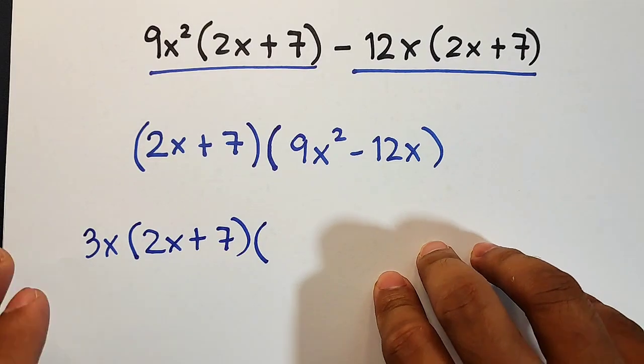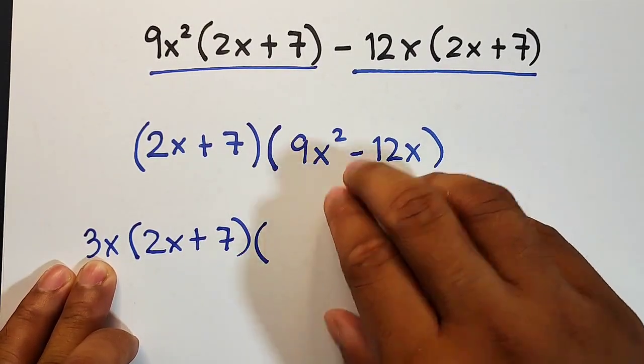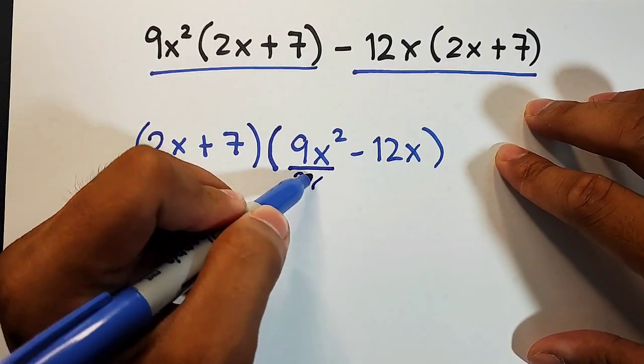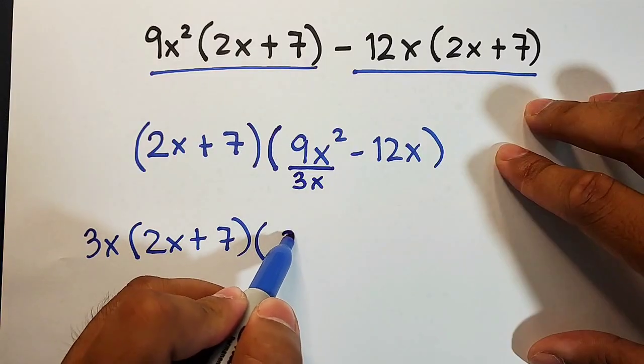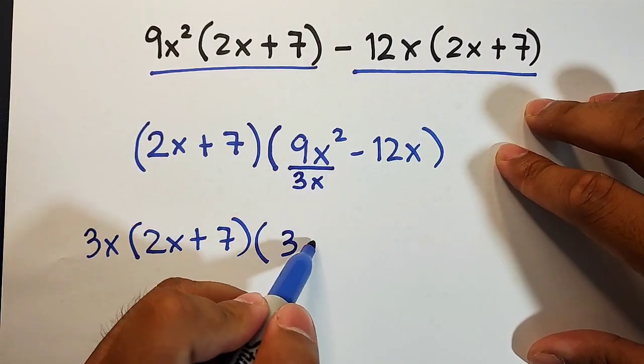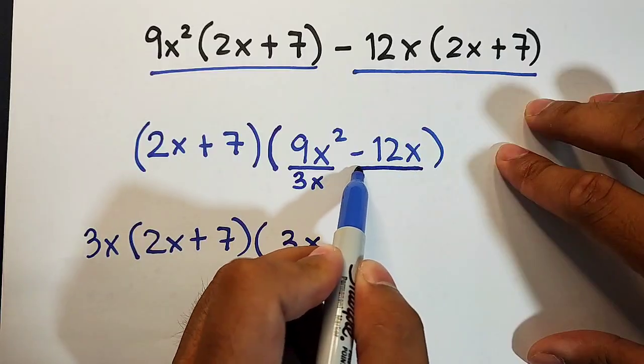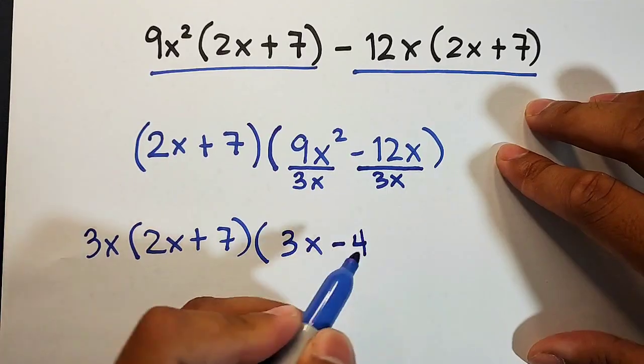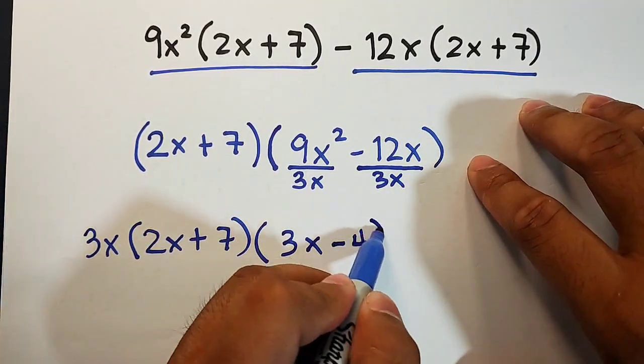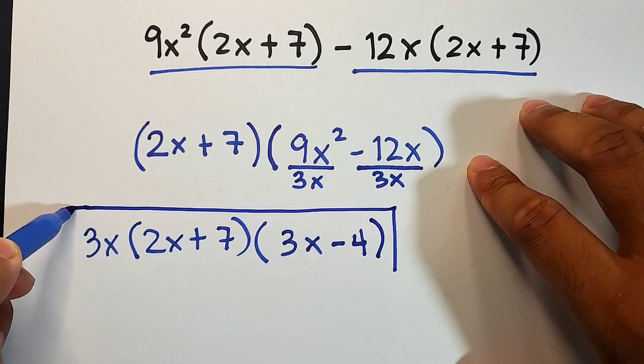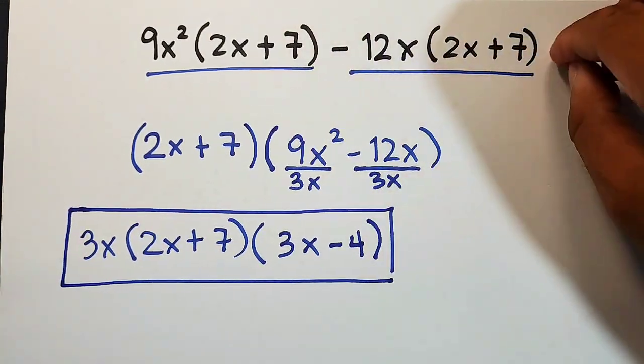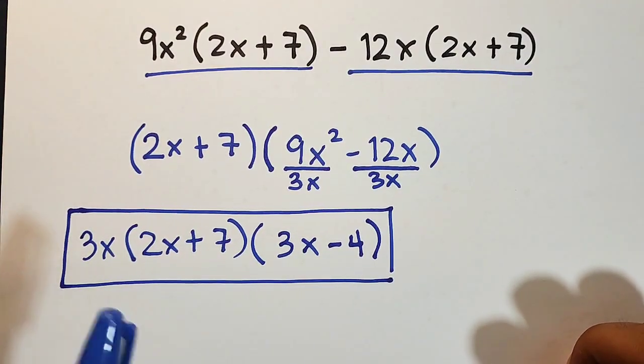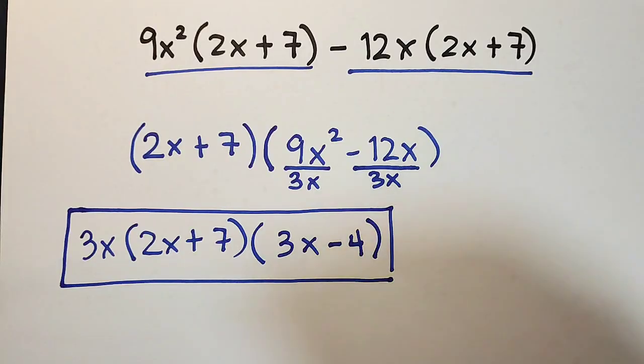So factor out 3x times - let me copy this - 2x + 7. To get the other factor, since the 3x came from this, divide this by 3x. 9 divided by 3 is 3, x² over x is x. Then -12x divided by 3x: -12 divided by 3 is -4, minus 4, and the x variable cancels. Here is the complete factored form of the original given polynomial: 3x(2x + 7)(3x - 4), and that's it guys.